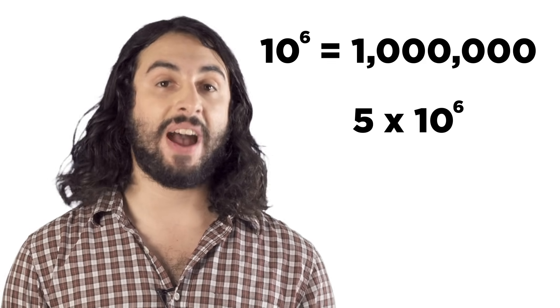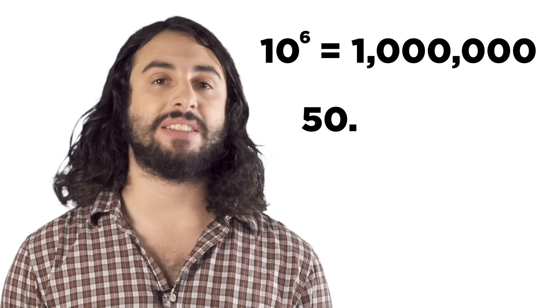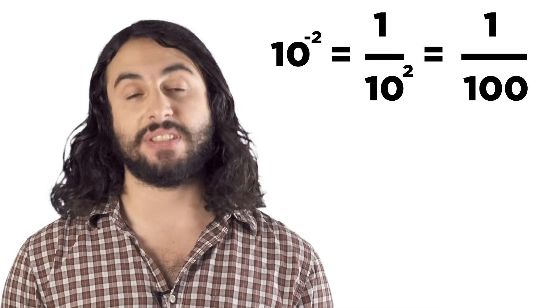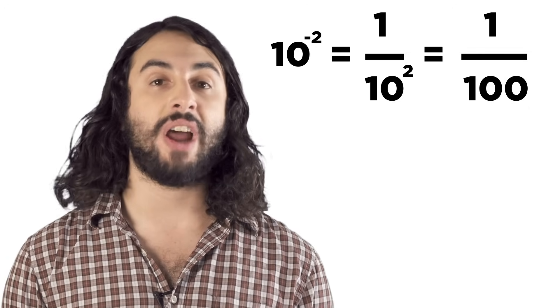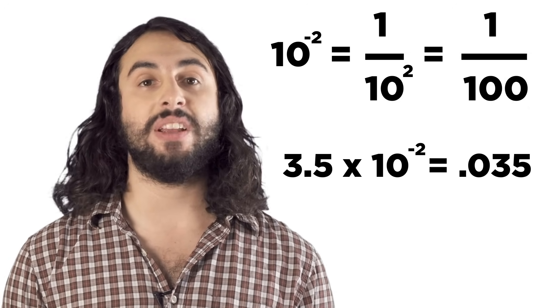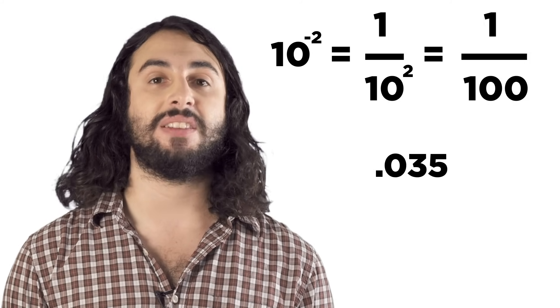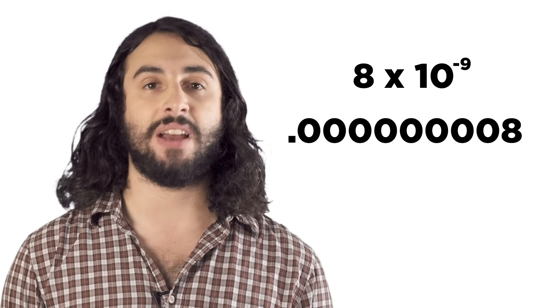Ten to the sixth, or a one with six zeros, is a million, so 5 times ten to the sixth is five million — we can get this by moving the decimal over six times, adding zeros if we need to. We can also discuss very tiny numbers this way. Ten to the negative second means one over ten squared, or one one-hundredth, so 3.5 times ten to the negative two is 0.035. And 8 times ten to the negative nine will be that number once we move the decimal nine times to the left.